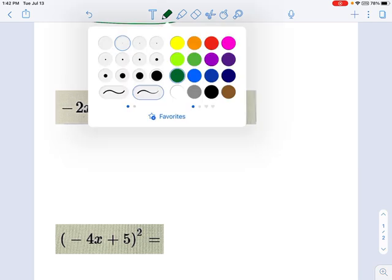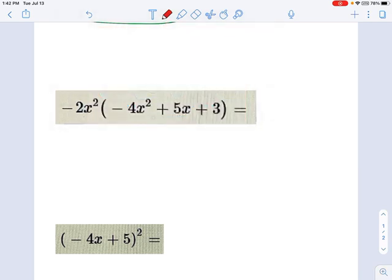So here's another example. In this one, we're distributing multiplication through the parenthesis. A lot of people just call it the distributive method. So negative 2x-squared times negative 4x-squared becomes positive 8. That's negative 2 times negative 4. And then the x-squared times the x-squared makes x to the 4th. Right? You add up the exponents.